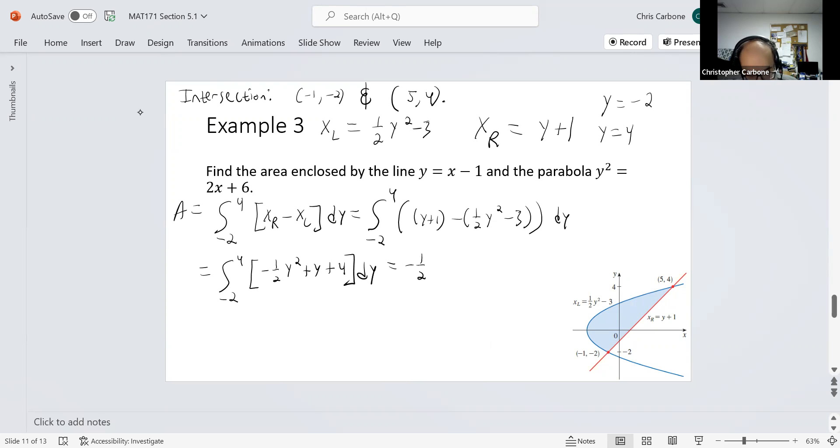And that is negative one half times y cubed over 3 plus y squared over 2 plus 4y, and this whole thing will be evaluated between negative 2 and 4. Negative one sixth times 64 plus 8 plus 16 minus 4 thirds plus 2 minus 8. When doing that, we get ourselves a value of 18 for that blue shaded area in our picture.